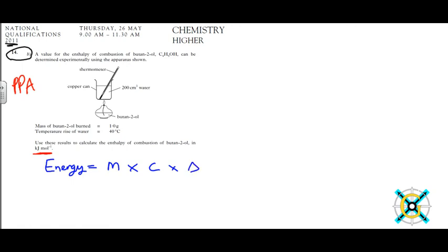So let's first think about the mass. We know there's 200 centimeters cubed of water. 200 centimeters cubed, 1000 centimeters cubed is equal to one liter, and we also know one liter is equal to one kilogram. So 200 centimeters cubed is equal to 0.2 kilograms.